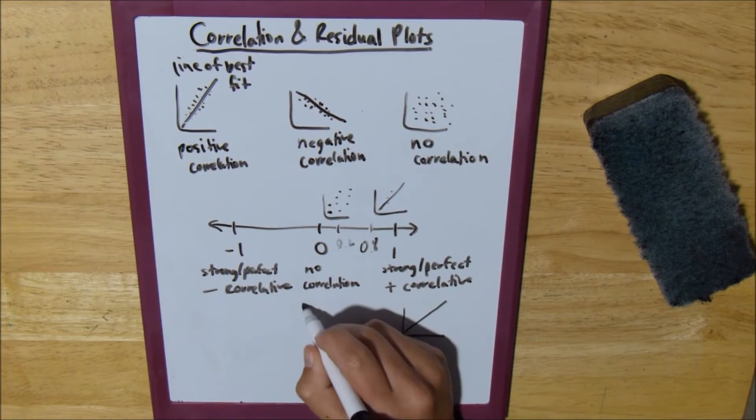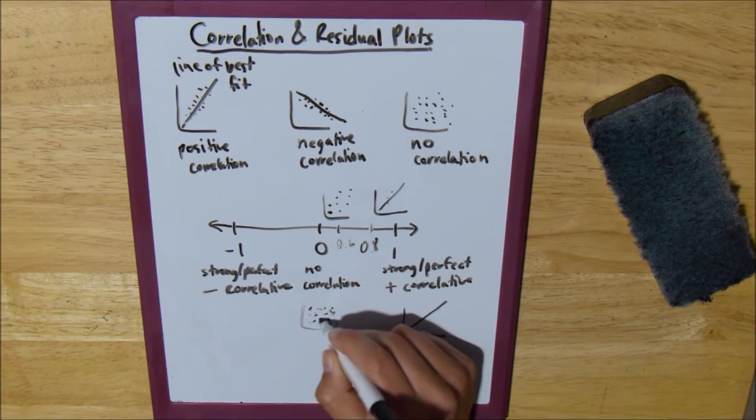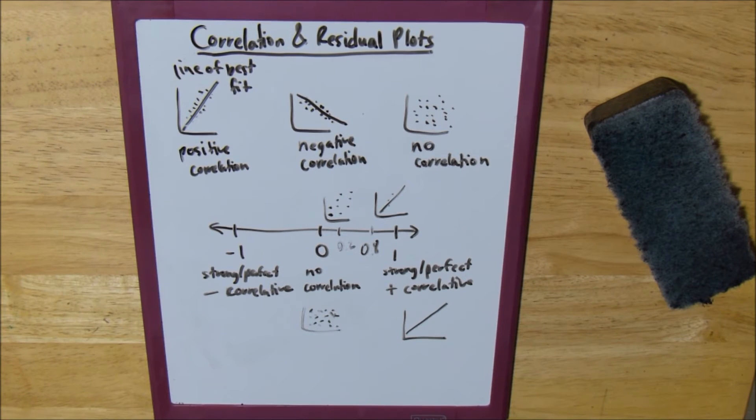Until you get to 0, which is, like I said before, just all over the place points. No correlation. You don't know which way, if it's going positive or negative, you just don't know.